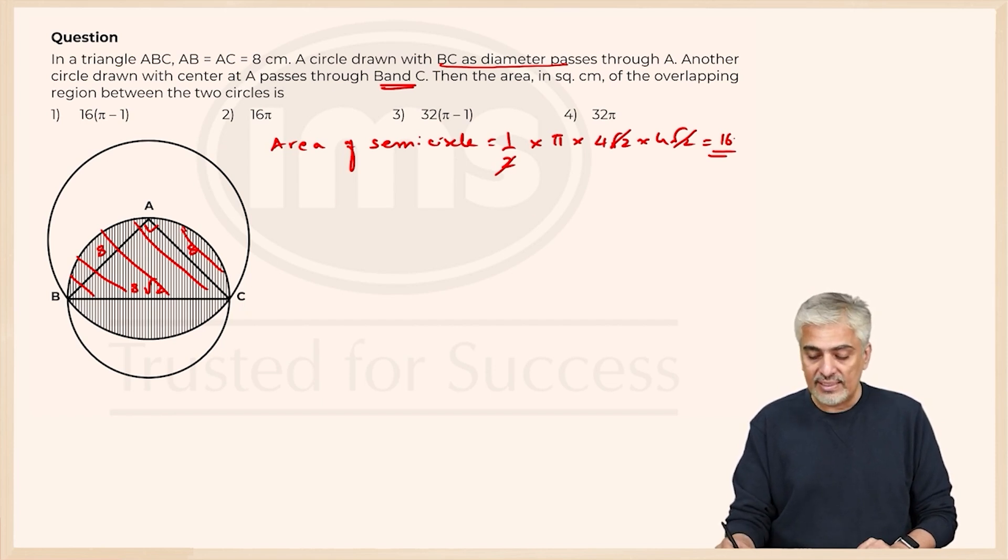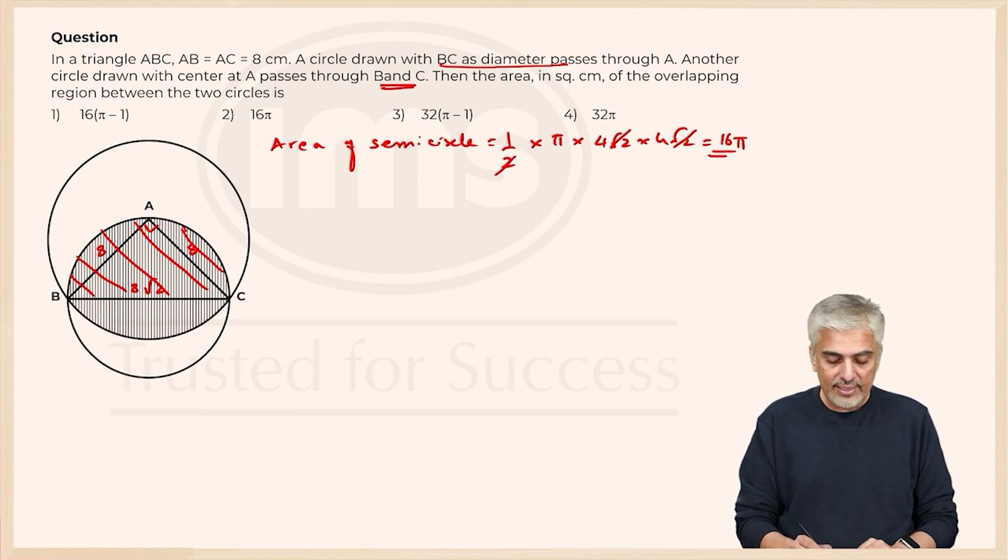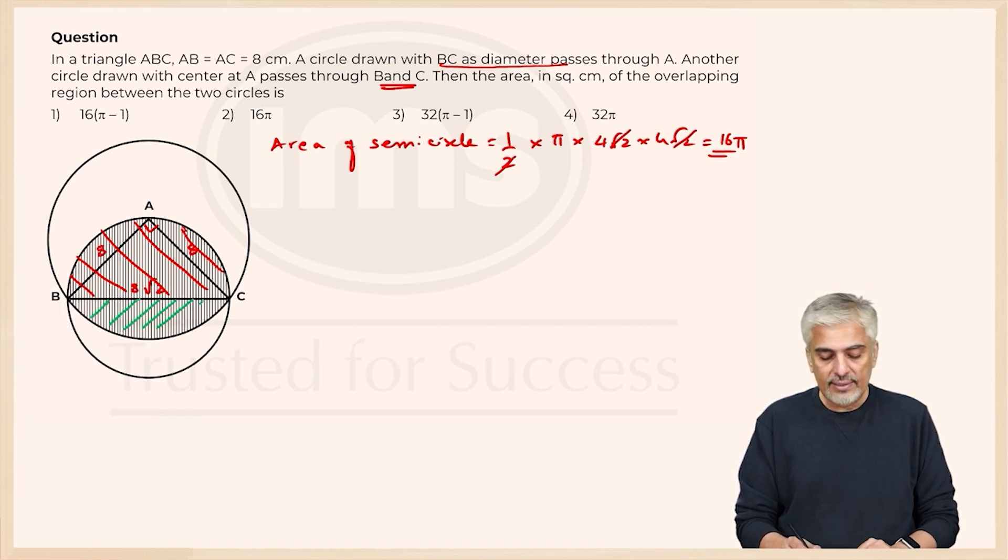Clearly 16 pi, because I'm not going to put the value of pi because all the options had the answer in terms of pi. So that was okay. What about the second shaded part? Let's just shade that part, that is this part. That is the area of the segment.